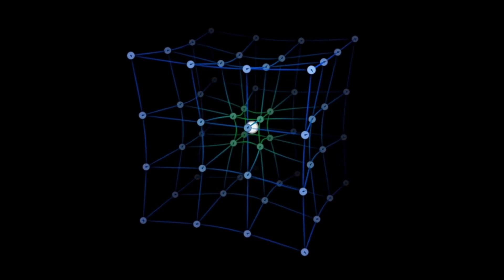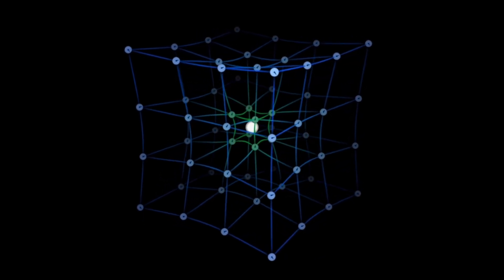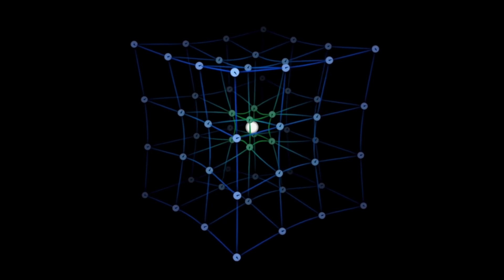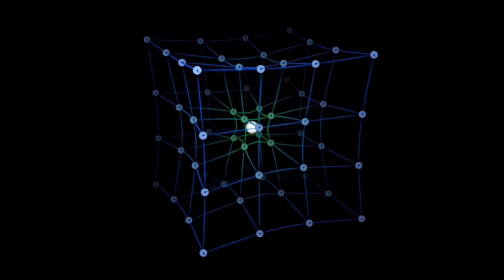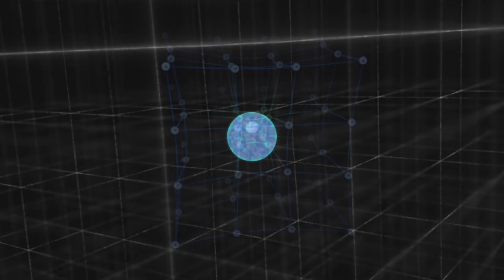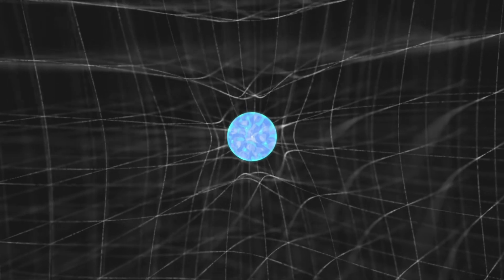Einstein's theory reshaped our understanding of the cosmos. The dance between light and gravity, once puzzling in the Newtonian framework, found an elegant explanation in the geometry of curved space-time.